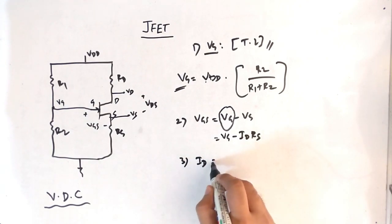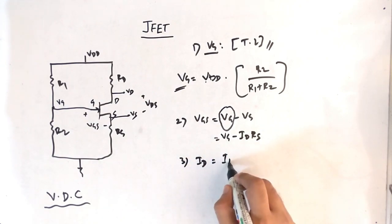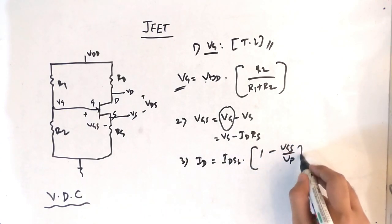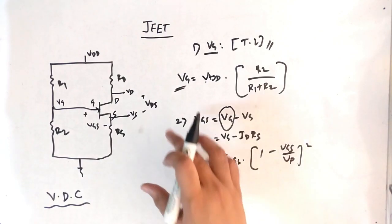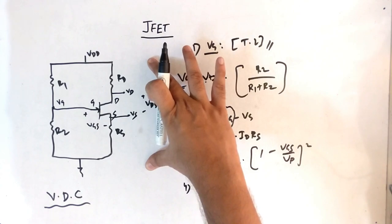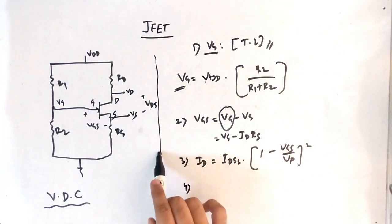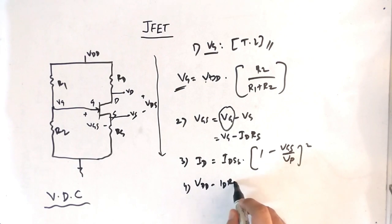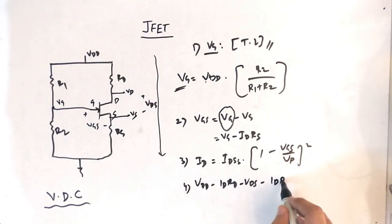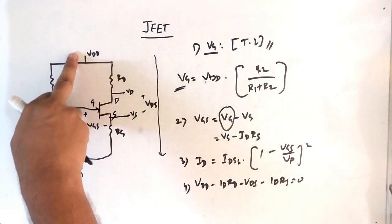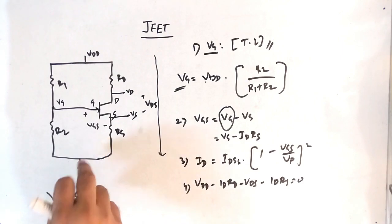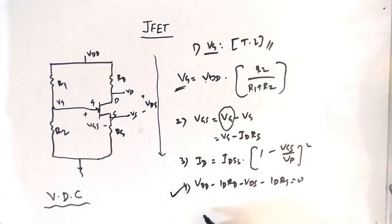The third step is to find the value of ID using the Shockley equation: ID equals IDSS multiplied by (1 minus VGS over VP) squared. The fourth step is to find the value of VDS by applying KVL to the drain-source loop. Applying KVL gives: VDD minus ID×RD minus VDS minus ID×RS equals zero, and by rearranging this you get the value of VDS.